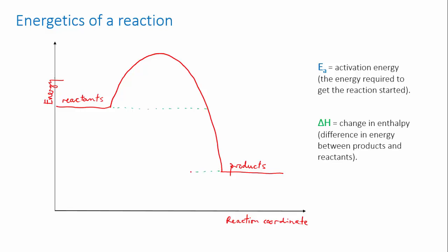Now there are two important quantities here. Delta H, the change in enthalpy, is the difference in energy between the reactants and the products. If delta H is negative, it means that energy is emitted, as in this reaction here, and we call the reaction exothermic. If delta H is positive, the reaction is endothermic.